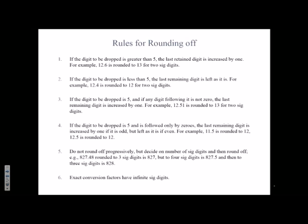If the digit to be dropped is 5 and is followed only by 0s or nothing after that, the last remaining digit is increased by 1 if it is odd, but left as it is if it is even. And you know, this rule is pretty arbitrary because you want to sort of even out the playing field, right? You don't want to bias the rounding for odd number versus even number.